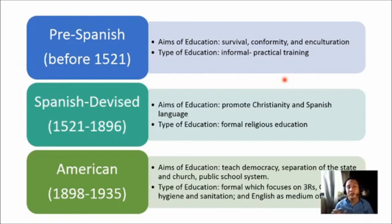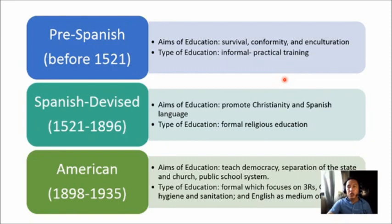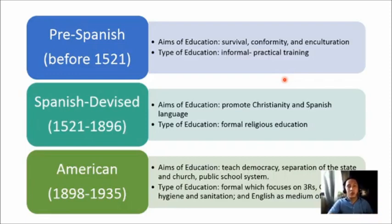From 1521 to 1896 — the Spanish Regime — Spain colonized the Philippines for more than 300 years, specifically 375 years. The Spanish missionaries played a major role in educating early Filipinos. Religion was the tool Spain wielded to make the Philippines its colony, tied to the three G's: God, Gold, and Glory. During this time, the curriculum became more structured compared to before, but the emphasis was on religion.